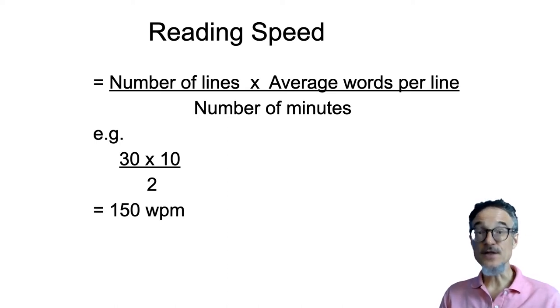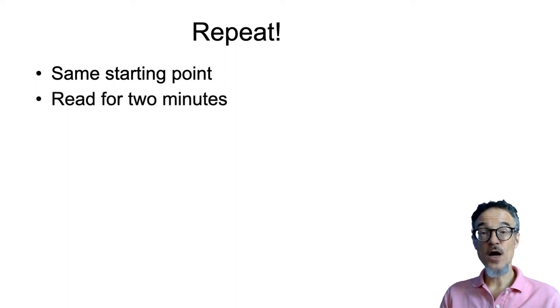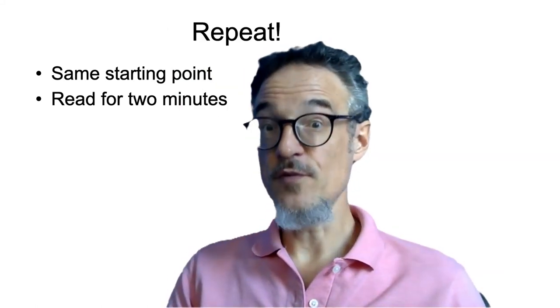Now what I'd like you to do is repeat. So go and measure your reading speed again. Start at the same place. Time yourself for two minutes. If you want to go back and use the timer here, you can do. And off you go and repeat it.